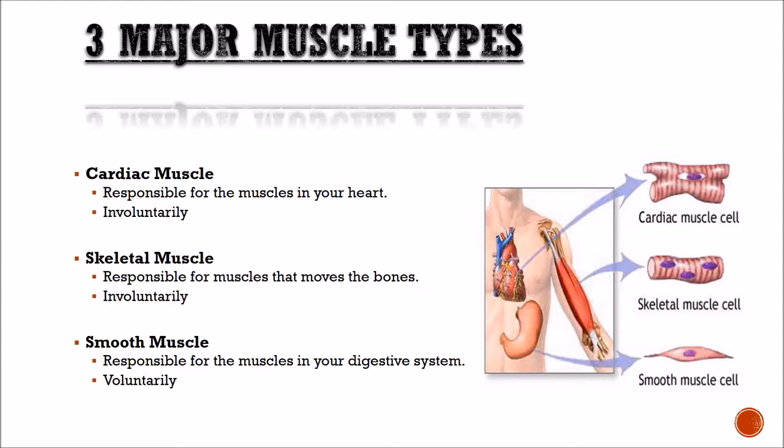There are three major muscle types. Cardiac muscle is responsible for the muscle in your heart. Skeletal muscle is responsible for the muscle that moves the bone. Smooth muscle is responsible for the muscle in the digestive system. Cardiac and smooth muscle are both involuntary, while skeletal muscle is voluntary.